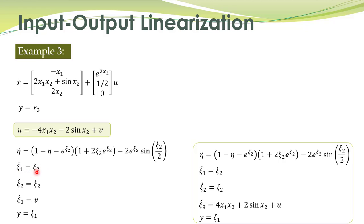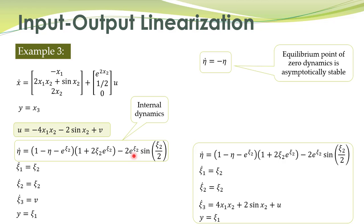The resulting system is: xi1 dot equal to xi2, xi2 dot equal to v, and output y equal to xi1 — the input-output linearized system. The internal dynamics have already been checked; the equilibrium point of the zero dynamics is asymptotically stable. We can then solve the stabilization problem as well as the tracking problem for this nonlinear system.